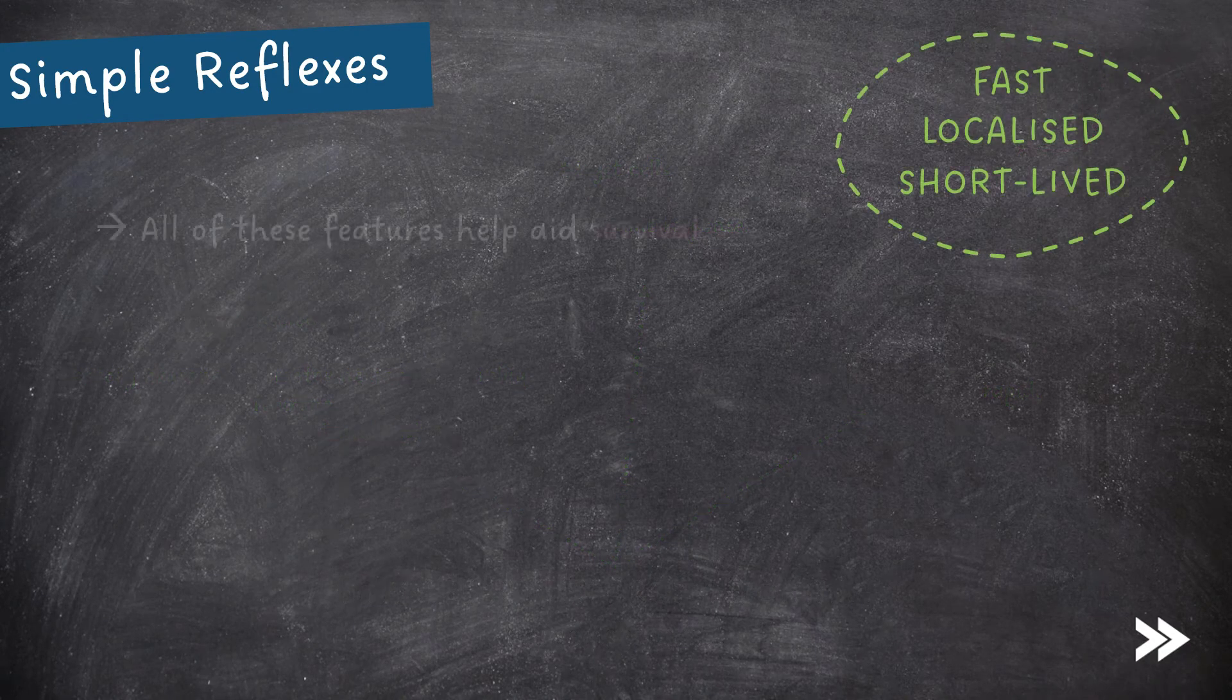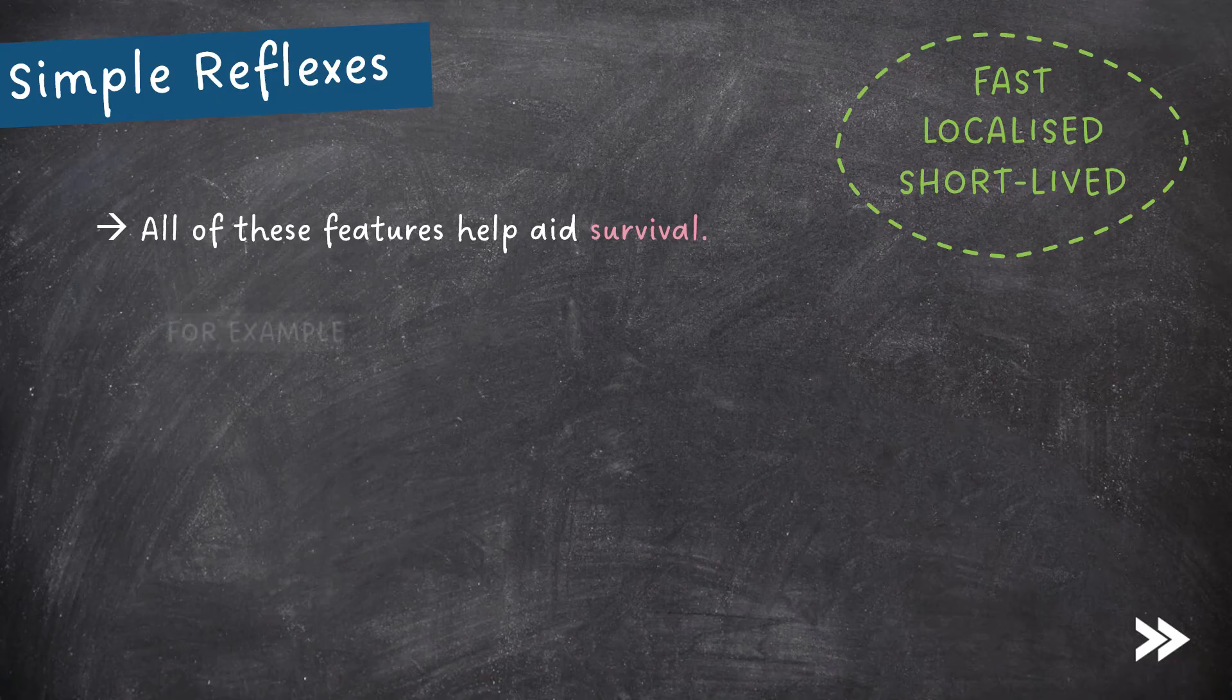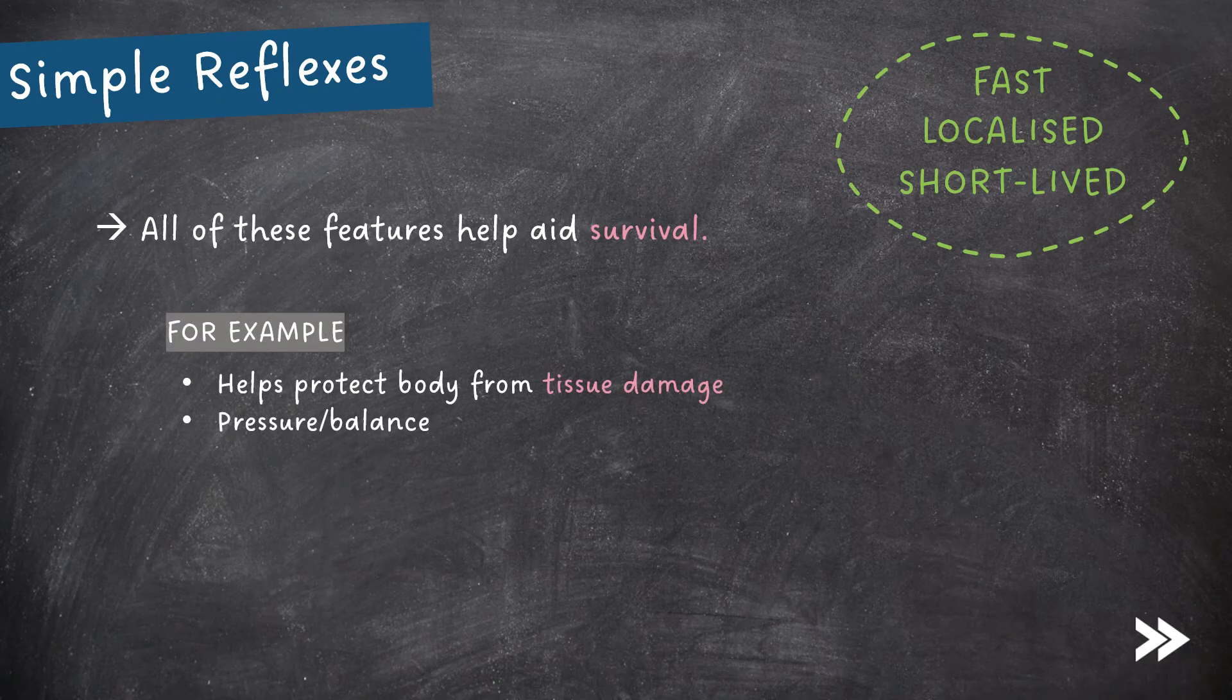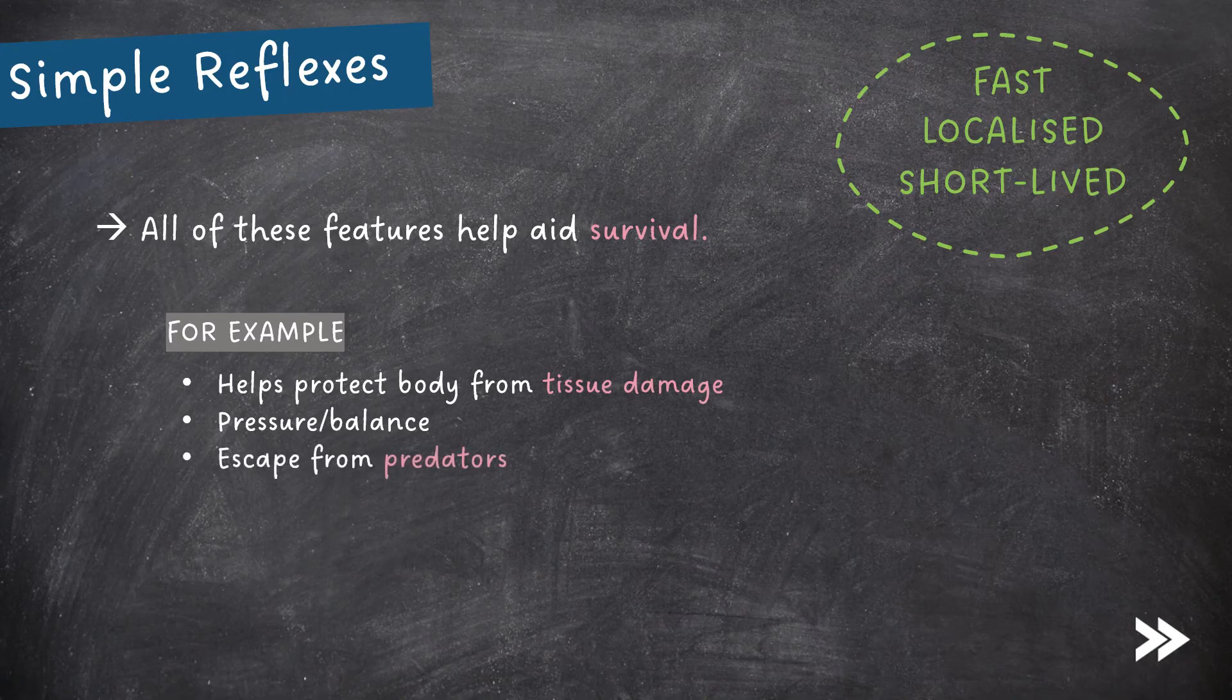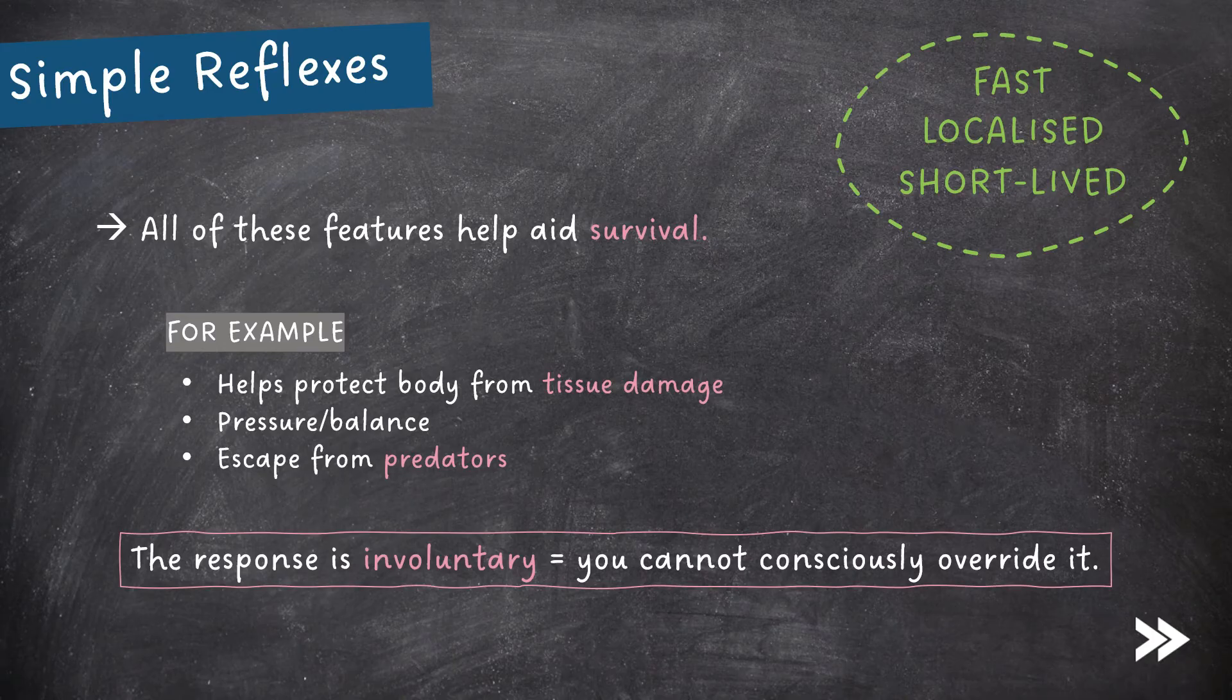All of these features help aid survival. For example, they can protect the body from tissue damage, they may aid with pressure or balance, or help with things like escape from predators. The response is also involuntary, meaning that you cannot consciously override it.